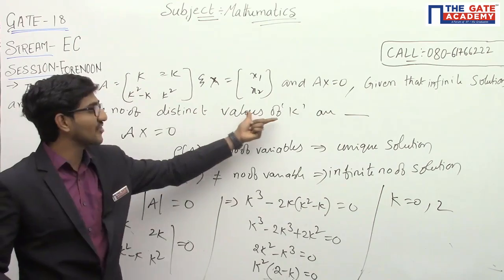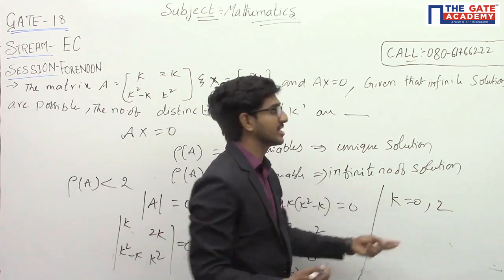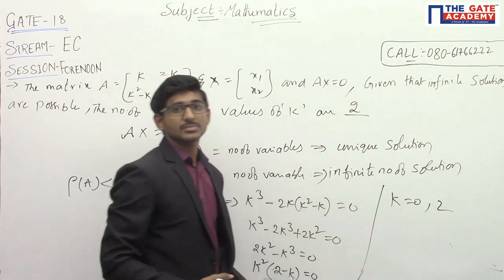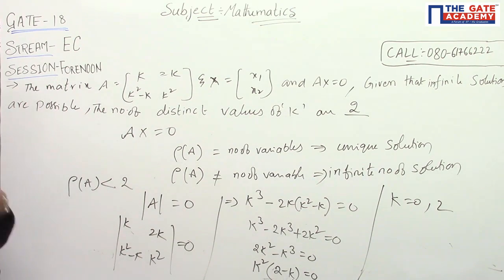So, how many values for k? There are two values. One is 0, another one is 2. So, answer is two values.